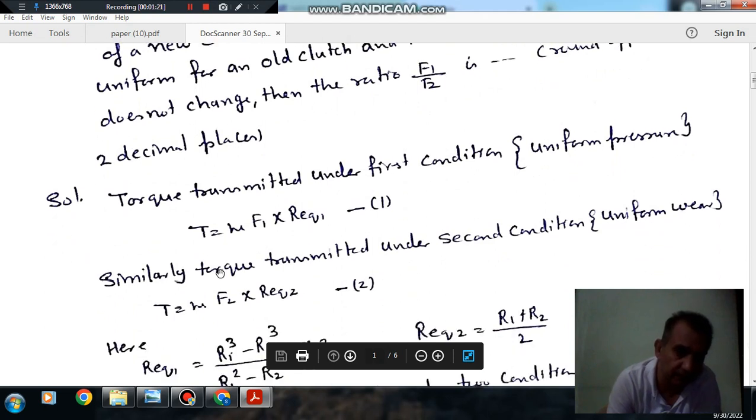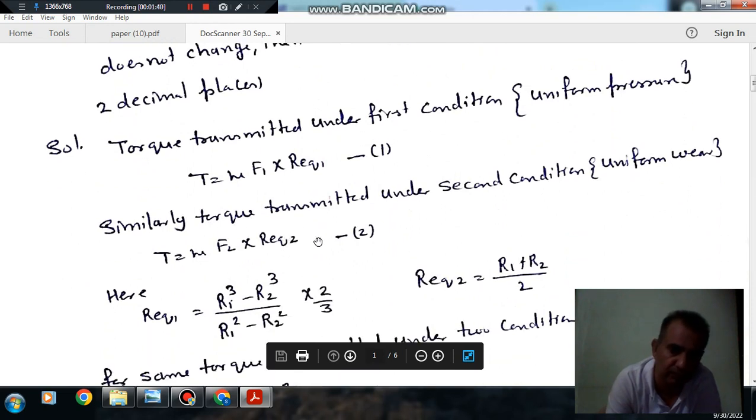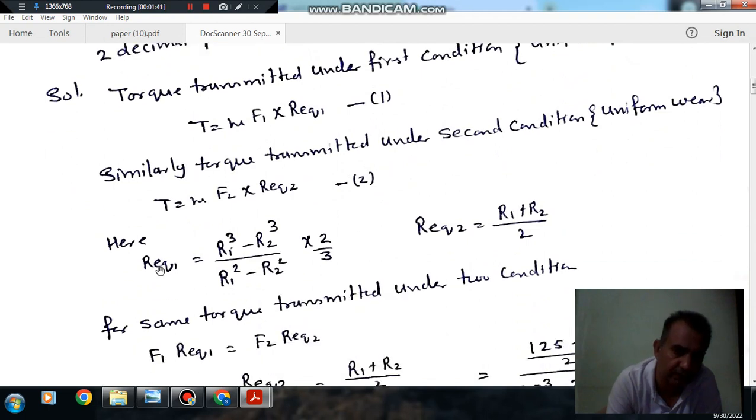When the clutch wears out and uniform wear takes place, the same torque is transmitted by force F2. The torque is μ F2 R_eq2, where R_eq2 is the radius according to uniform wear theory. According to uniform pressure theory, R_equivalent is (R1³ - R2³) divided by (R1² - R2²).